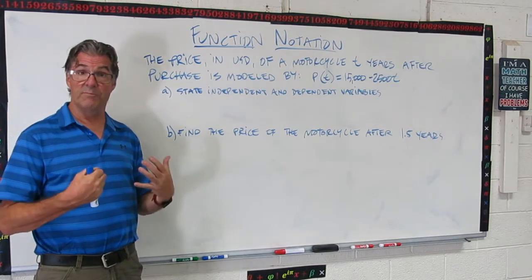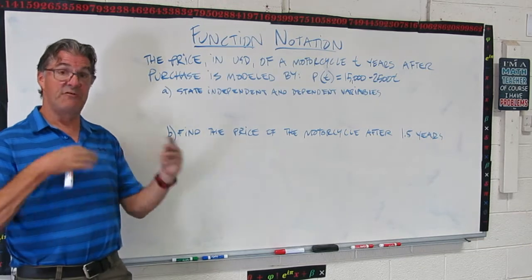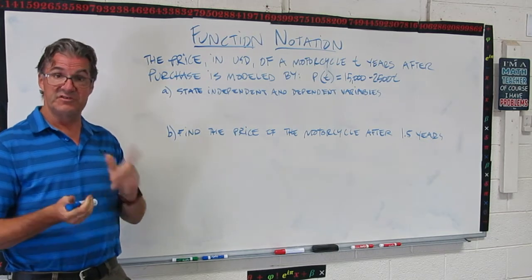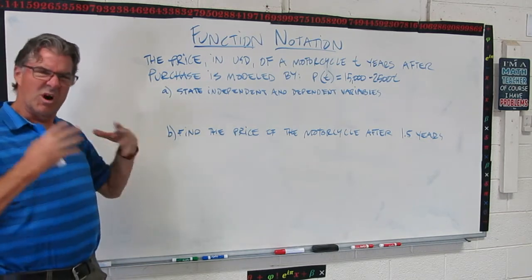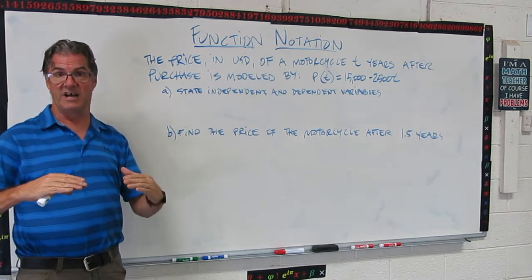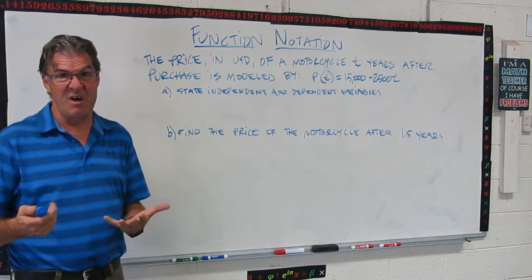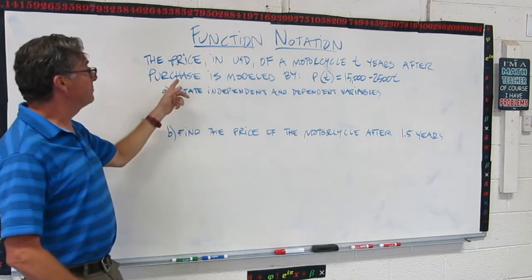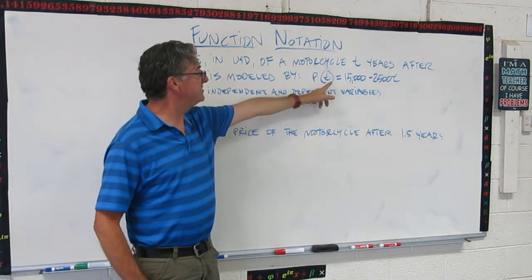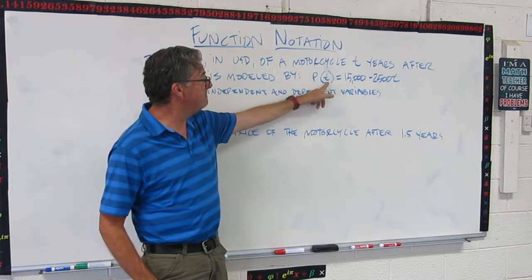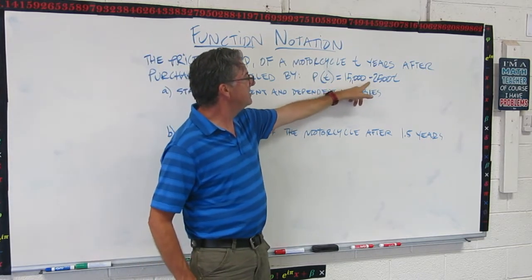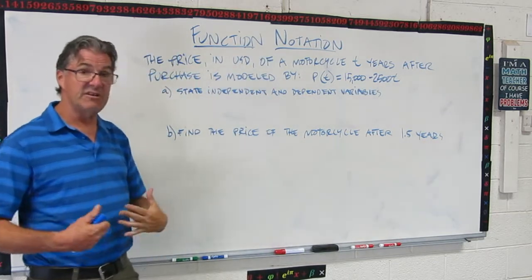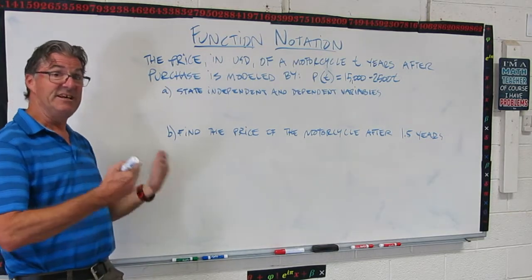Now let's do an IB style word problem that deals with a function and asks you four different kinds of questions about that function or questions that you have to use the function to answer. Basically we've got a situation where a motorcycle loses value over time. Makes sense. It gets older, it gets used, it's not worth as much. So the price in US dollars of a motorcycle t years after purchase is modeled by p(t), price as a function of time, is modeled by 15,000 - 2,500t.